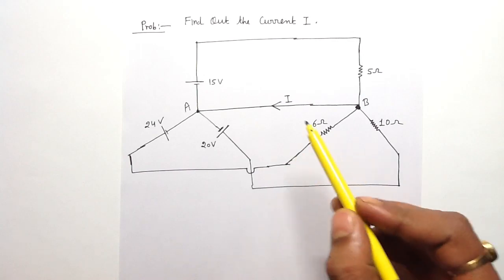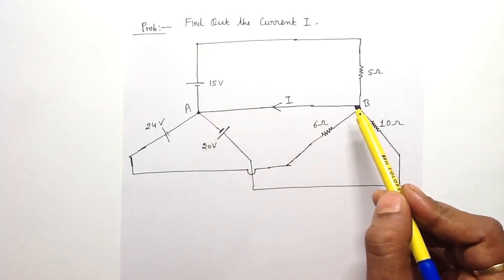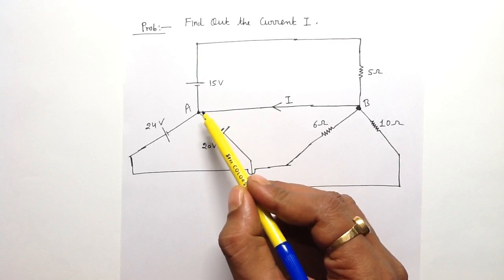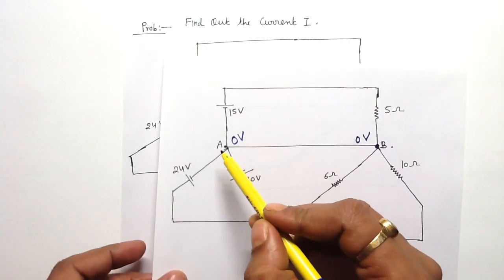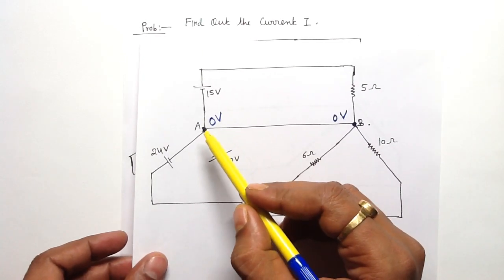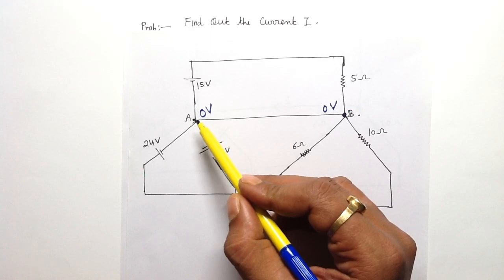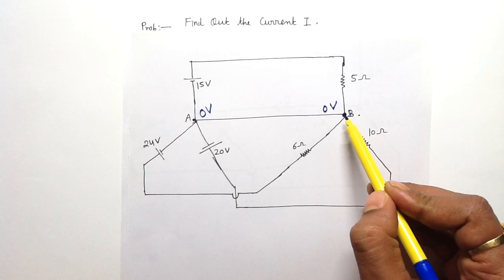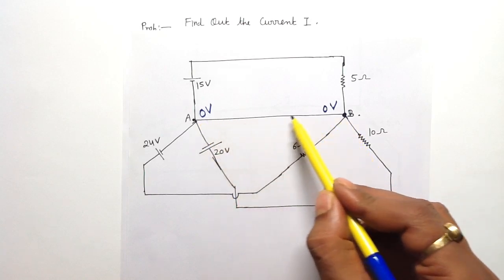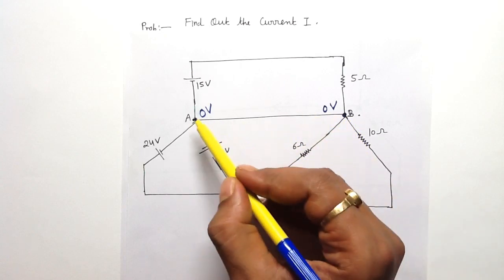We are going to solve this problem — we have to find out the current in branch AB. Let us assume that the potential of point A is 0 volt. If the potential of point A is 0 volt, the potential of point B will also be 0 volt, because there is no electrical element present between points A and B.